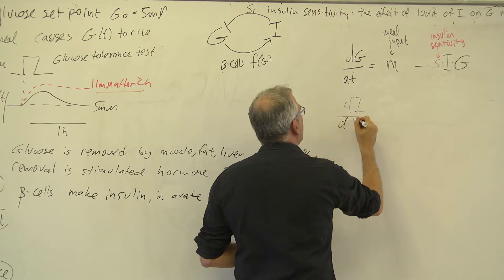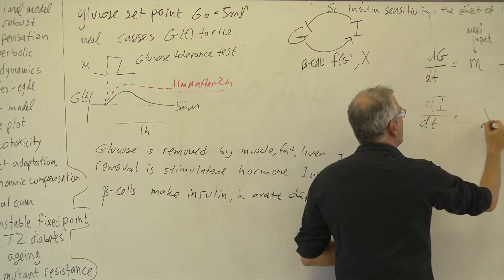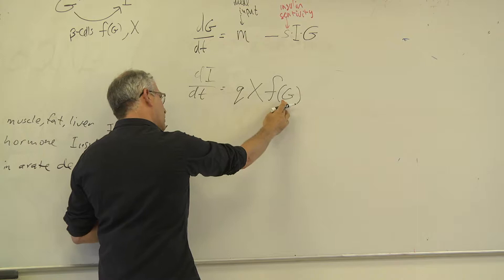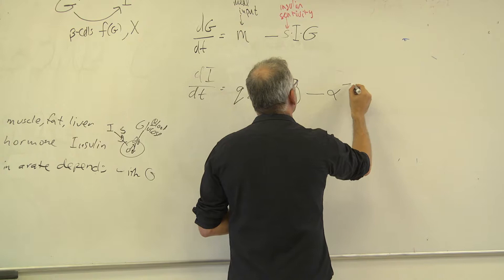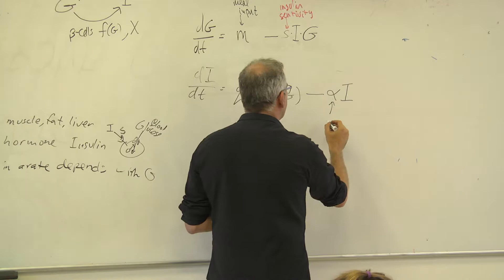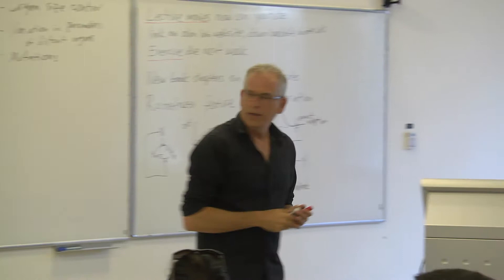Let's work out how insulin levels go up. These beta cells, I'm going to call them X - X is the number of beta cells - and they secrete insulin according to some function F(G). The more glucose, the more insulin is secreted. So this is the cells sensing glucose and secreting more insulin. And then insulin is degraded - the half-life of insulin is about 30 minutes. So insulin itself is a molecule that gets degraded.